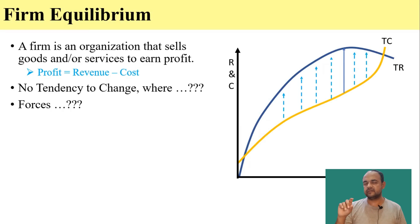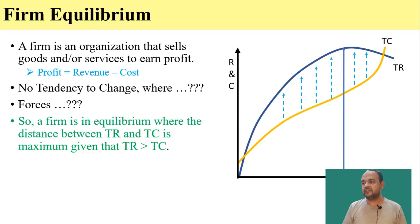The vertical distance between the total revenue curve and total cost curve shows the profit at a given point. Here we can see that from the heights and we can easily see that the profit is maximum or the height of this arrow is maximum when the firm is producing Q star quantity of the good. So the firm is in equilibrium where the distance between total revenue and total cost is maximum given that total revenue is greater than total cost.